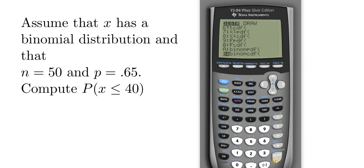All we do now is press enter one time. The trials is the N. So N is always the number of trials when you're working with binomial. P is the probability of success. So in this case it's 0.65. And the X value is 40.